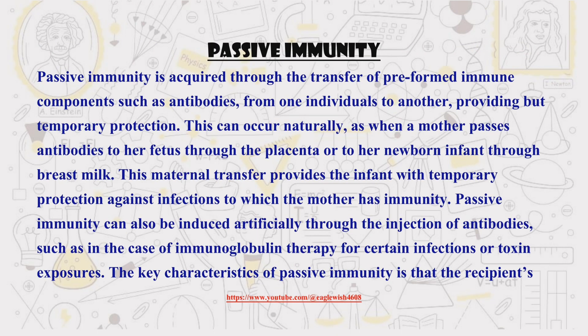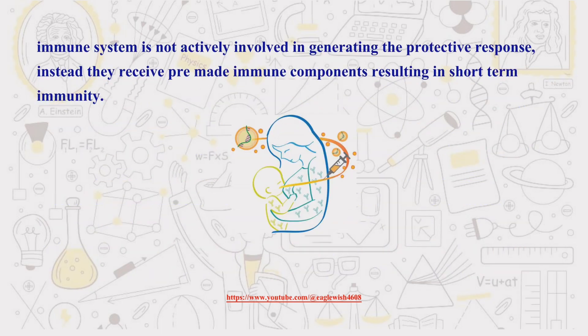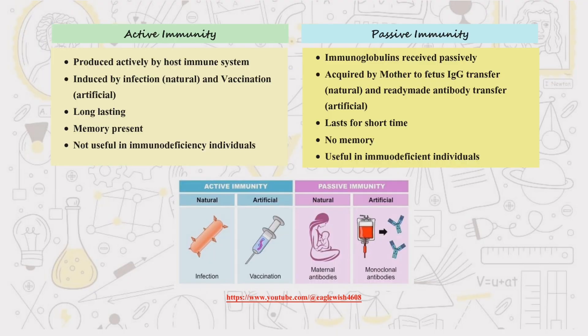Next, we'll look at passive immunity. It is for short-term only. Passive immunity is like borrowing a superhero suit — this type of immunity occurs when a person receives pre-made antibodies, providing immediate but temporary protection. Here's a table to highlight the differences between active and passive immunity.